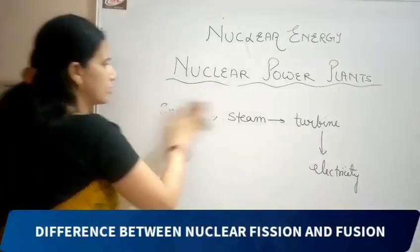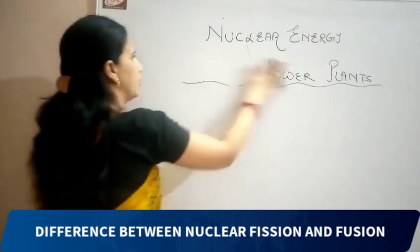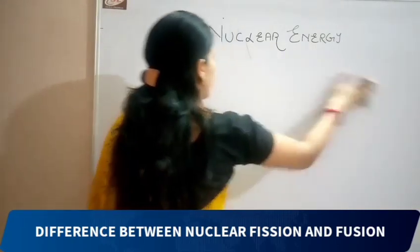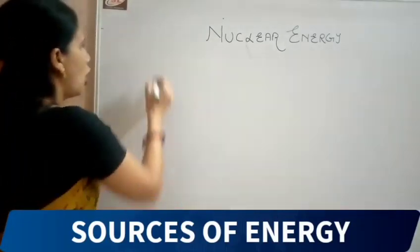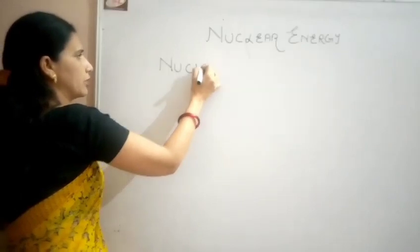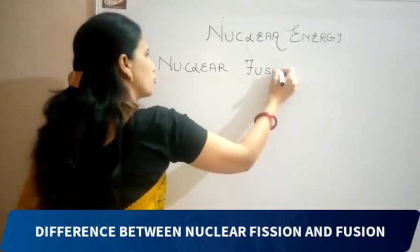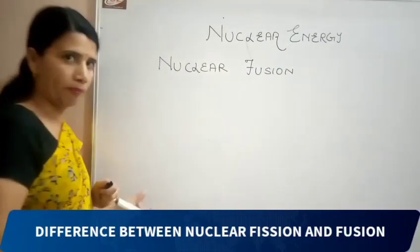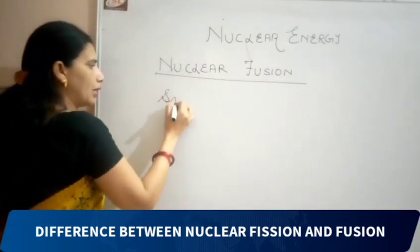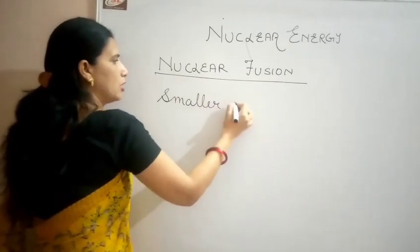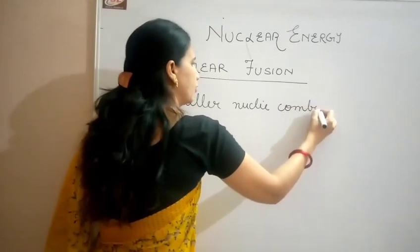Let's now study about a different reaction — nuclear fusion reaction. Earlier we had studied about nuclear fission. Now it is nuclear fusion reaction. Fission means breakdown and fusion means to form. So in a nuclear fusion reaction, smaller nuclei combine to form a bigger nucleus.